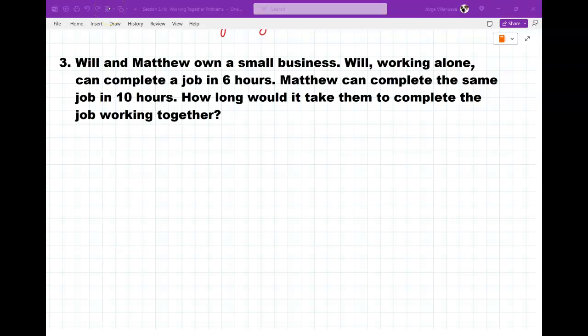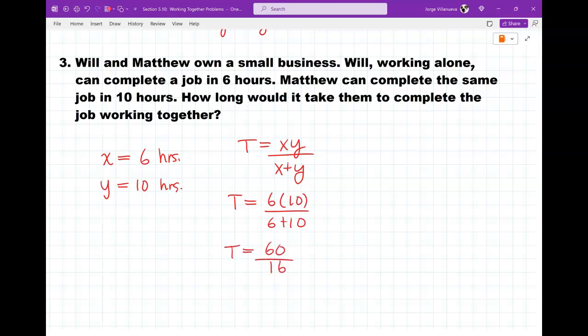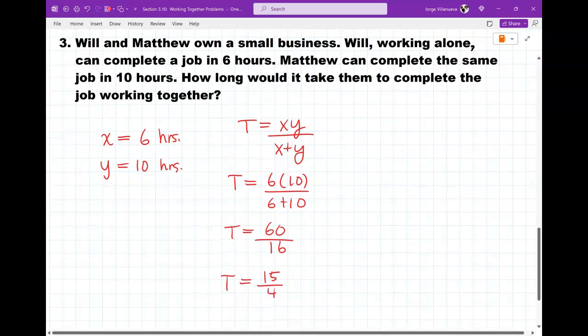Again, that doesn't matter. That doesn't give me any information. But they own a small business. Will, working alone, can complete a job in six hours. Matthew can complete the same job in ten hours. How long would it take them to complete the job working together? So, we have Will and Matthew owning a small business. Will, working alone, can complete a job in six hours. Matthew can do the same job in ten. How long will it take them? So, they gave me times for both people. So, Will will call X, since that was the first thing that they mentioned. So, six hours. And then, we'll say that Matthew is going to be the ten hours. So, T equals XY over X plus Y is my formula. So, I'll just put my numbers in. Six times ten over six plus ten. So, that's 60 over 16. I'll try to reduce that a little bit. I can reduce that by four. So, T is equal to 15 over four. And 15 over four is approximately three and three quarters. So, 3.75.